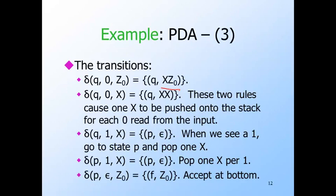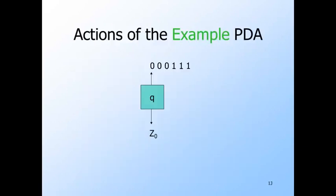The last move of this PDA says that if we are in state P with Z0 on top of the stack, then without using any input, we go to state F. The Z0 remains on the stack, although that is not important. Here's a moving picture of the PDA we designed with 0, 0, 0, 1, 1, 1 waiting on the input.